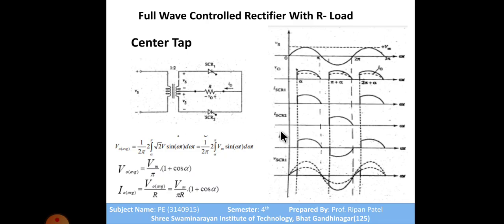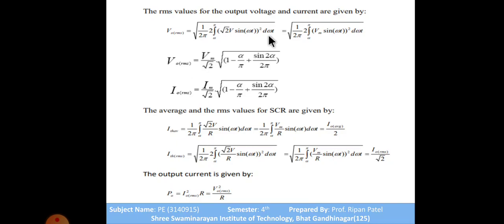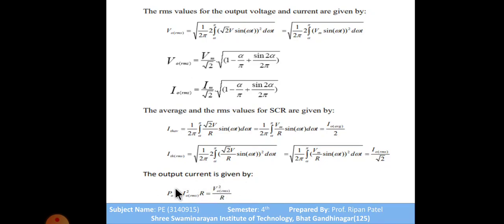The RMS value of the output voltage is: V_zero_rms = Vm/√2 × √(1 − α/π + sin2α / 2π). From that, I can find I_zero_rms. The output power P_zero = I_zero_rms² × R = V_zero_rms² / R. These are the voltage, current, and power equations for the full wave center tap controlled rectifier with purely resistive load, along with the SCR current equations.